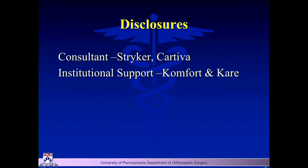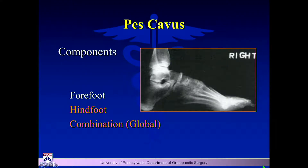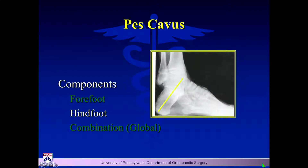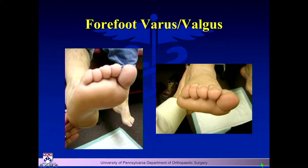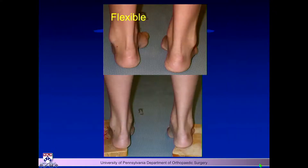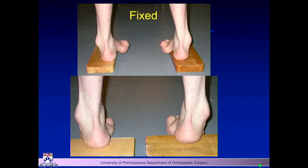These are pretty fascinating cases, usually associated with neuromuscular disease. The first thing you have to do is define whether it's a forefoot cavus, a hindfoot cavus, or a global cavus. You have to address each component of that cavus deformity. Forefoot varus and valgus is critical — you have to figure out whether these are flexible or fixed deformities, because that's what drives it. We all know about the Coleman block test: does it correct when you put them on the block or not?